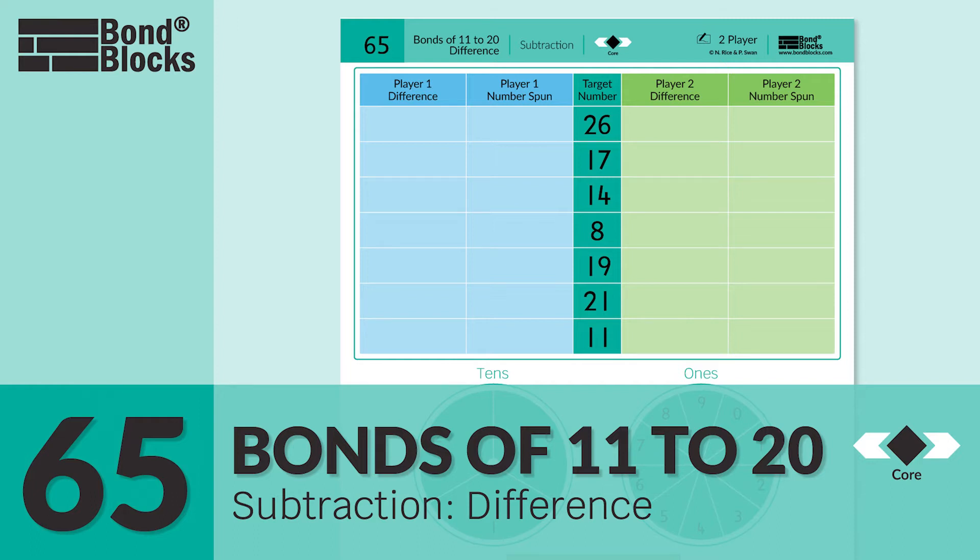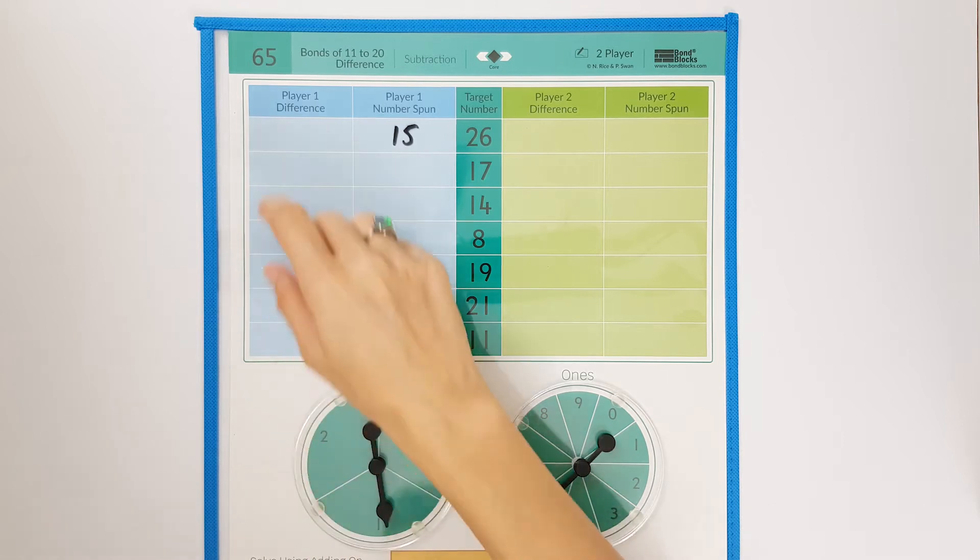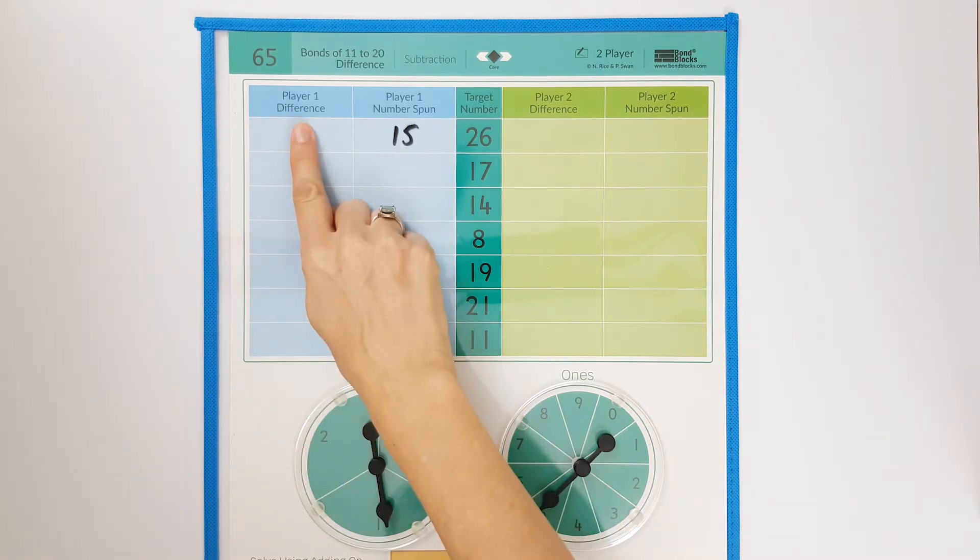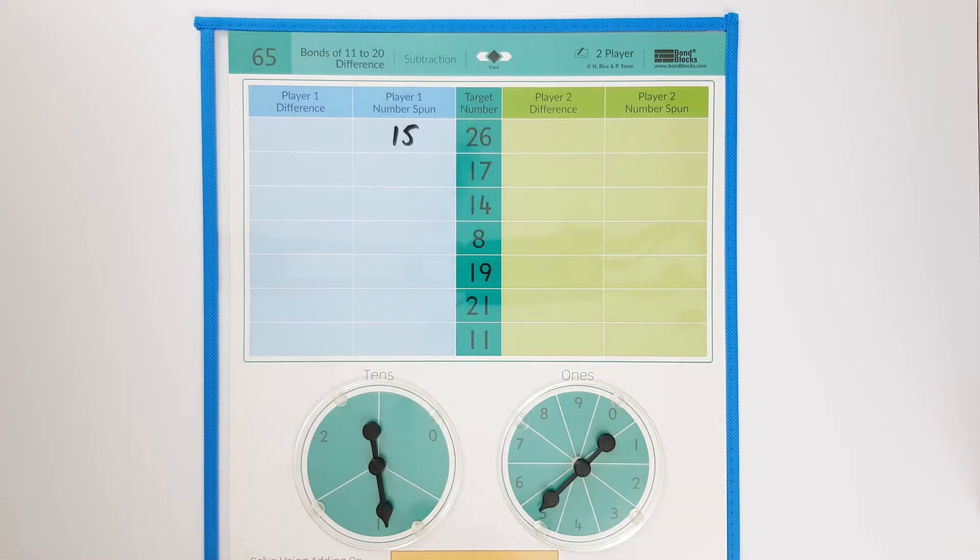Welcome to activity 65. In this activity we will be developing fluency calculating the difference between two two-digit numbers for wholes of less than 30.